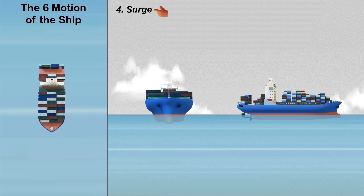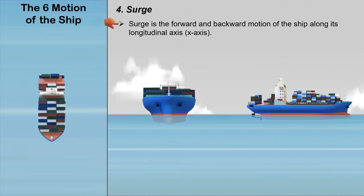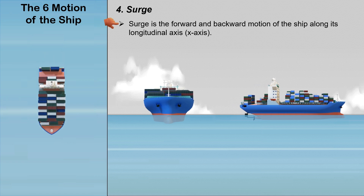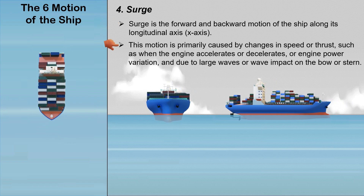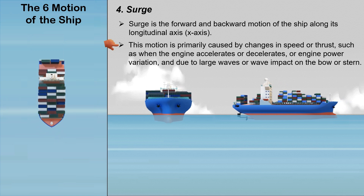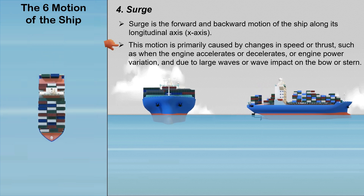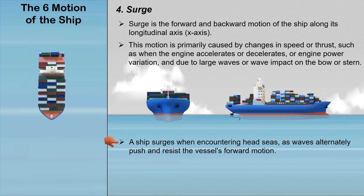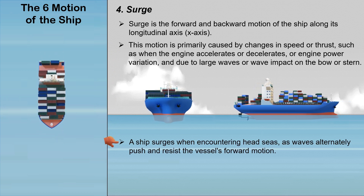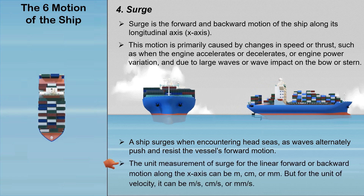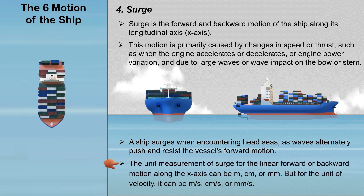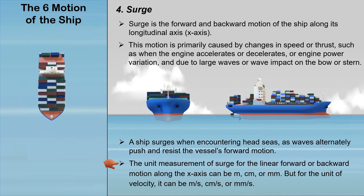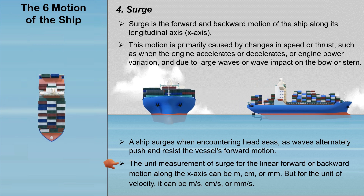Surge is the forward and backward motion of the ship along its longitudinal axis or x-axis. This motion is primarily caused by changes in speed or thrust, such as when the engine accelerates or decelerates or engine power variation, and due to large waves or wave impact on the bow or stern. A ship surges when encountering head seas, as waves alternately push and resist the vessel's forward motion. The unit of measurement for the linear forward or backward motion along the x-axis can be meter, centimeter, or millimeter; and for velocity, meter per second, centimeter per second, or millimeter per second.